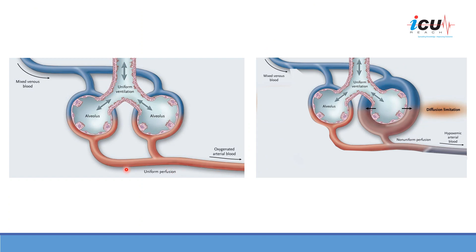On the left side of this graph is a normal lung with uniform ventilation and uniform perfusion. The ventilation-to-perfusion ratio is normal, and the mixed venous blood will get oxygenated normally as it passes through the vasculature of the lung in close contact with the alveoli.